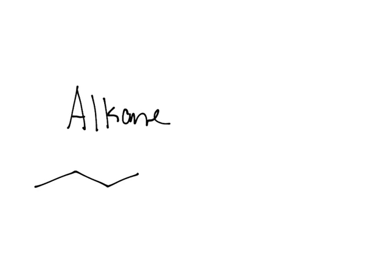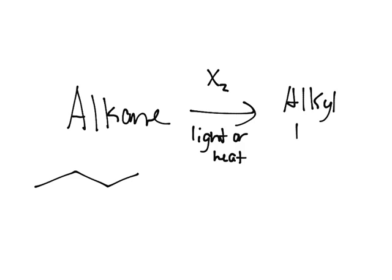which is, essentially, just a chain. It could be branched. And then, you add a halogen, X2. So, Cl2, I2, Br2. And then, you add light or heat. And then, it makes an alkyl halide. So, something like this, for example. We'll discuss this more in the next video. But, free radical halogenation and alkyl halides are really important.